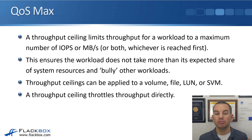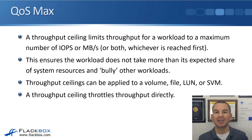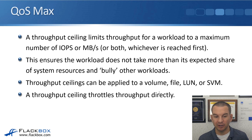A throughput ceiling limits throughput for a workload to a maximum number of IOPS or megabytes per second. You'll normally set either IOPS or megabytes per second, but you can set both. If you do set both, the limit will kick in as soon as either one is reached. This ensures the workload does not take more than its expected share of system resources and bully the other workloads running on the system.